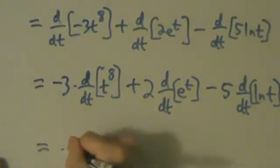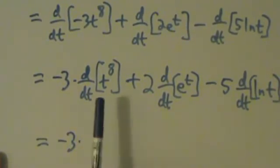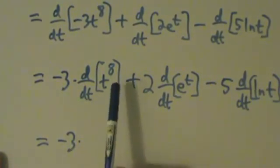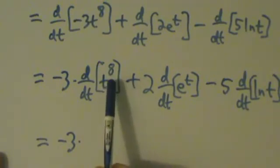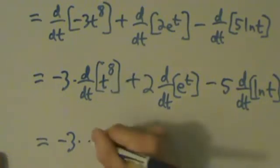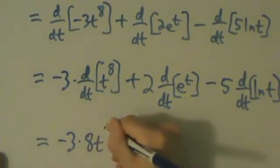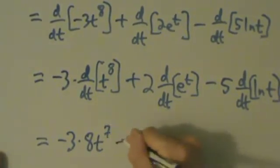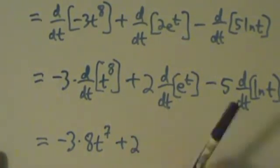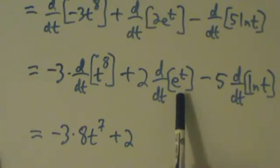So pretty much almost there. What's next? -3 times, what's the derivative of t^8? Well, that's just the power rule, right, with positive integer power. So that's going to be 8 times t^7. And then here, plus 2 times what? Derivative of e^t with respect to t is just e^t.